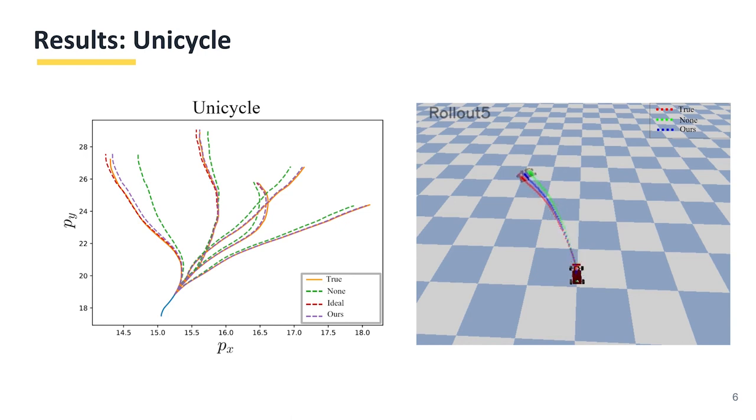We also tested on noisy datasets. After applying a low-pass filter, our method consistently outperformed the baseline across different levels of noise.